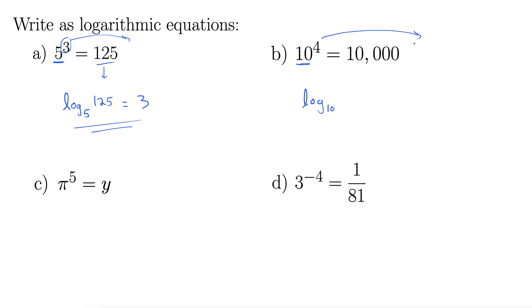This exponent goes way out to the right, so equals 4, and then this 10,000 comes inside. Log base 10 of 10,000 equals 4, logarithmic form of that equation.